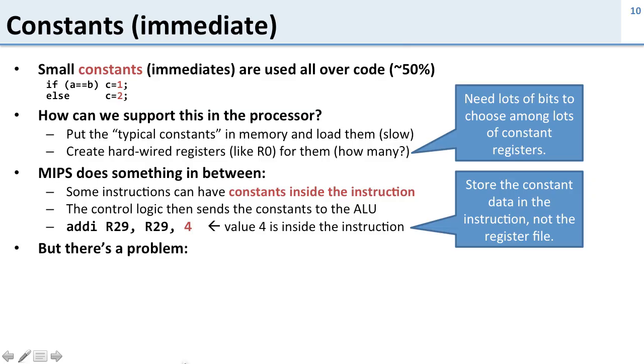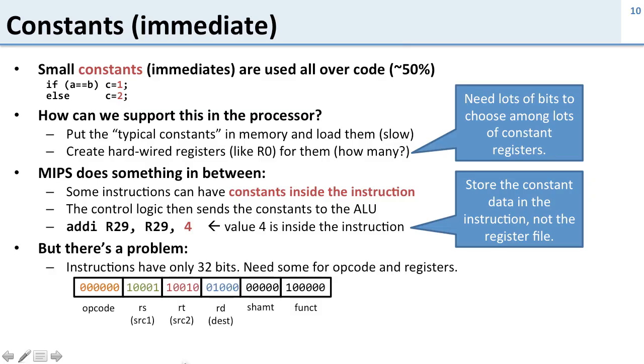But there's a problem with this, and the problem is this picture we showed you before. We only have 32 bits for our instructions and we already showed you that we're using all the space in the instruction for useful things. So where are we going to find the space in the instruction to encode this constant value? This is an engineering trade-off. When the people who designed MIPS sat down to do it, how did they trade off space in the instruction for controlling registers and opcodes versus space for having the immediates?